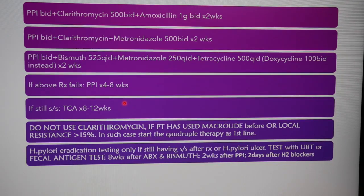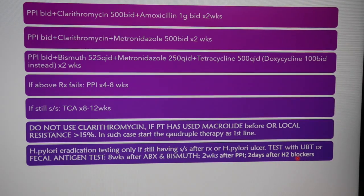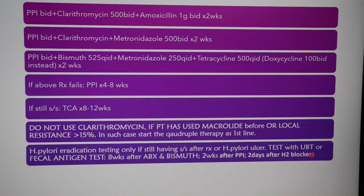Regarding H. pylori eradication testing: only test for eradication if the patient is still having signs and symptoms after treatment or the patient has an H. pylori ulcer. Testing is done with the urea breath test or fecal antigen test. Test eight weeks after antibiotics or bismuth are completed, two weeks after PPI treatment is completed, and two days after H2 blocker treatment is completed.